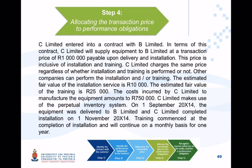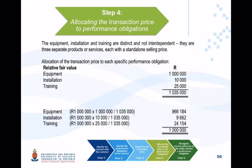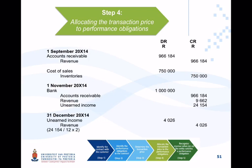Returning to Step 2, it appears that installation and training are separate performance obligations, and we have now been given the relative selling prices for these specific obligations. The costs incurred by C Limited to manufacture the equipment amount to 750,000 Rand, and they make use of the perpetual inventory system.